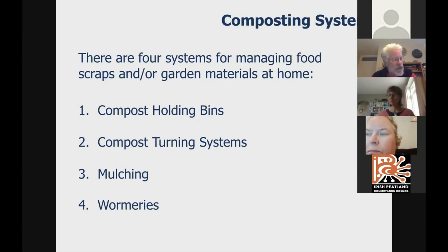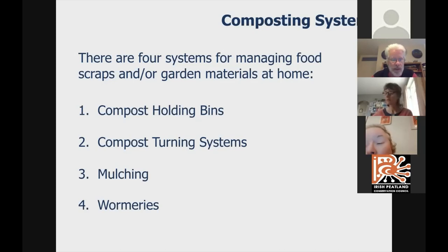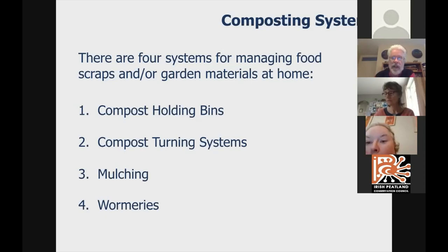The first two systems we're going to cover are for garden and landscape materials, and you can add food to them. Mulching is most appropriate for woody materials such as large prunings from trees or large bushes. Wormeries are very good at handling food from the kitchen. This is a vegetarian system — no meat, bones, or fish skins.